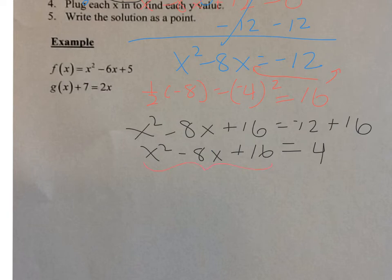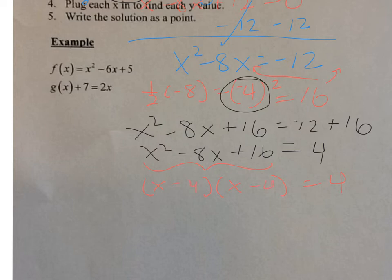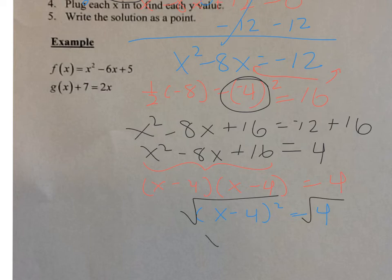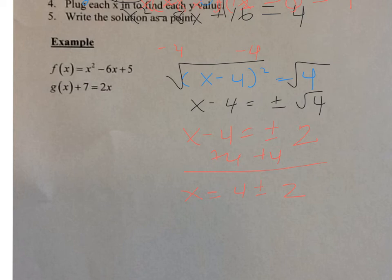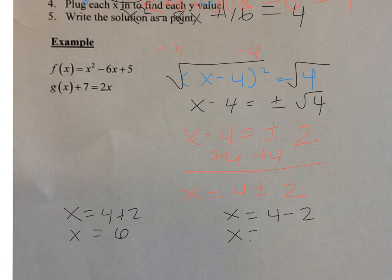On the left side I'm going to factor. The number inside the parenthesis is always the number you got when you did half of b, which was negative 4. So I have x minus 4 squared is equal to 4. To get rid of the square, I take the square root of both sides — don't forget the plus or minus. The square root of 4 is 2, so x minus 4 equals plus or minus 2. Adding 4: x equals 4 plus or minus 2. Separating: x equals 4 plus 2, which is x equals 6, and x equals 4 minus 2, which is x equals 2.